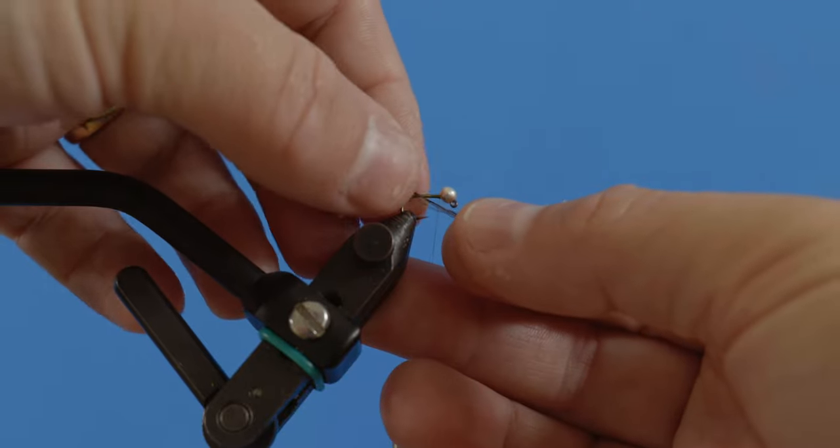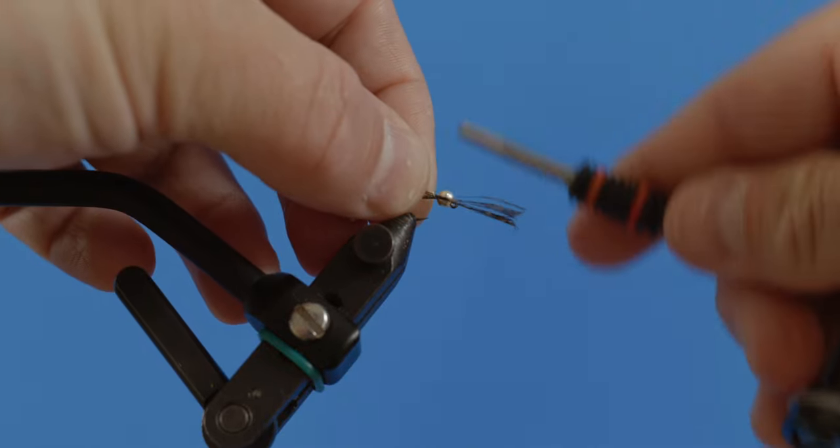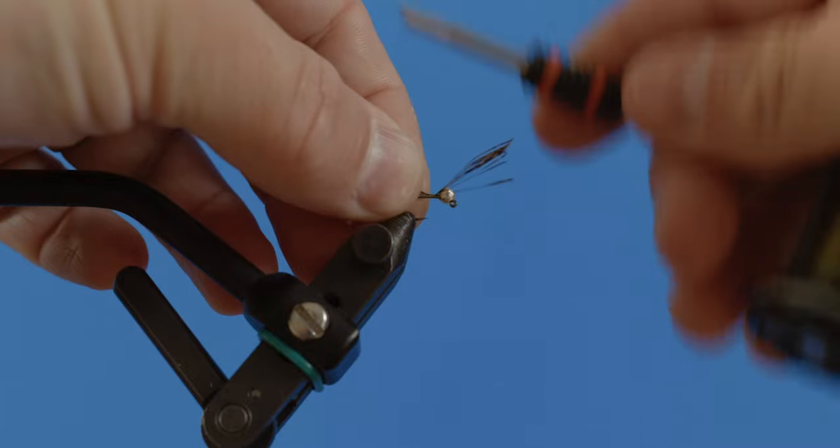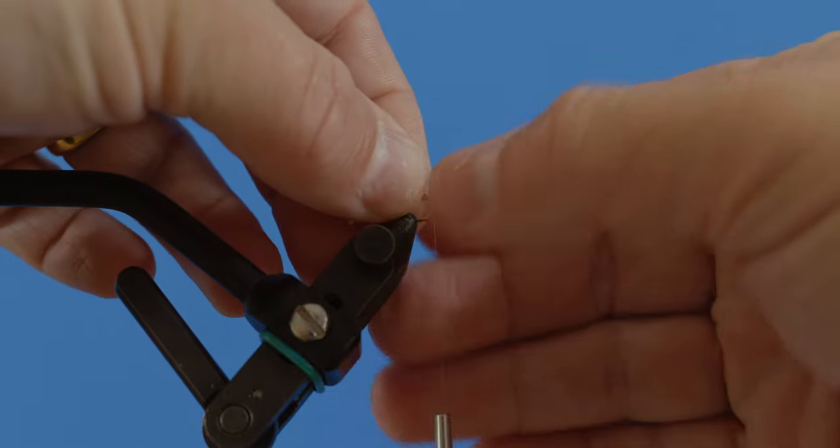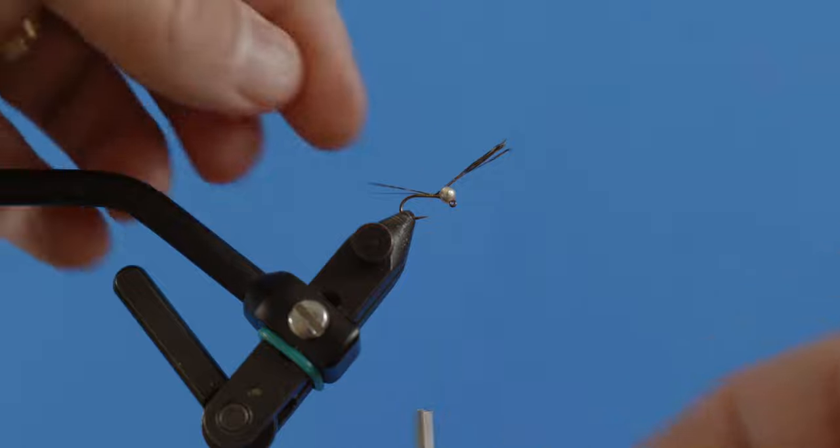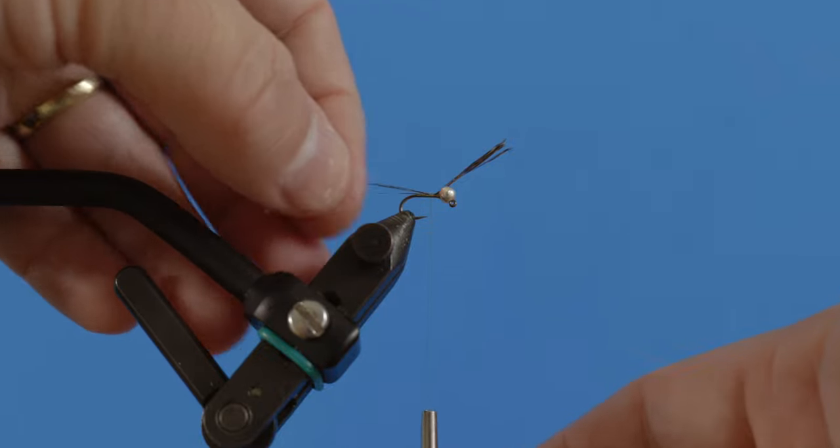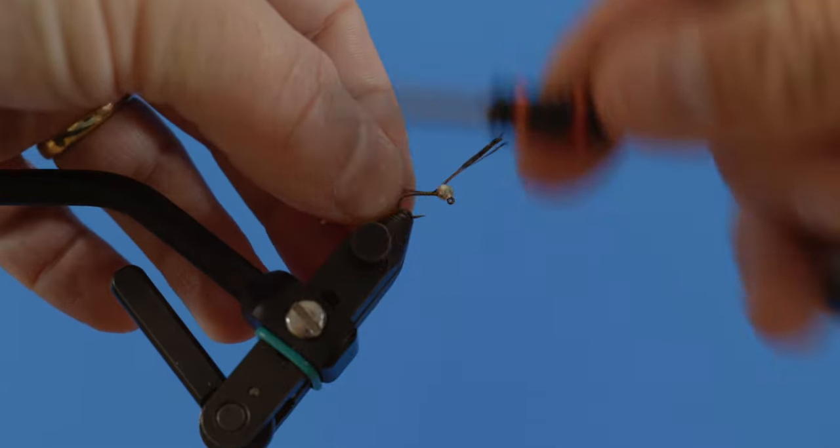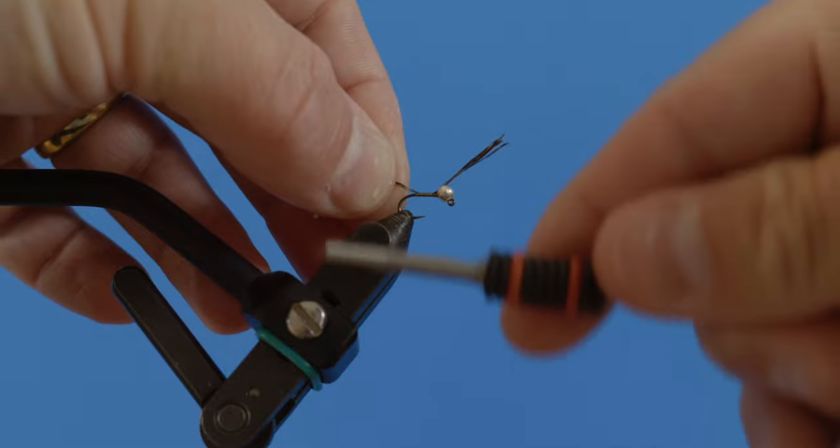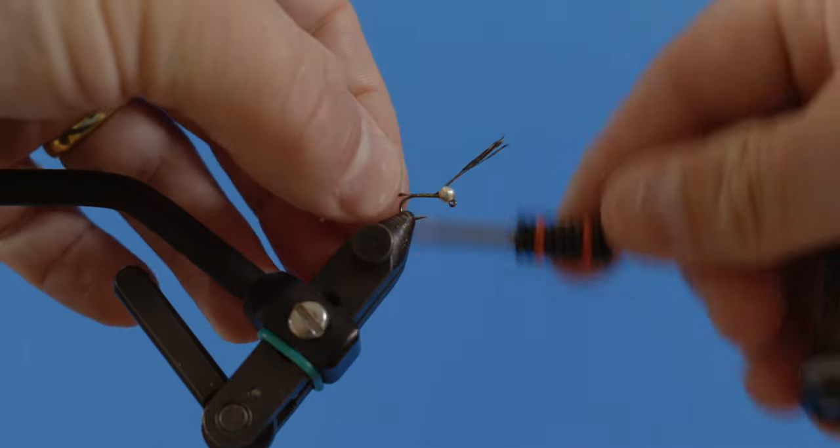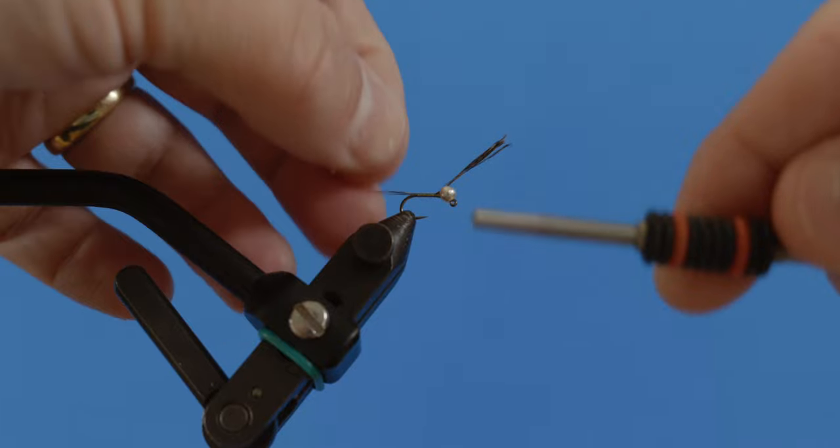Now we got those bunched up, and we're going to lock these in with a couple turns up on top. Then we're going to check the length, and I like that. That length is about the length of the body. So I want that tail to either be the length of the body or slightly shorter.